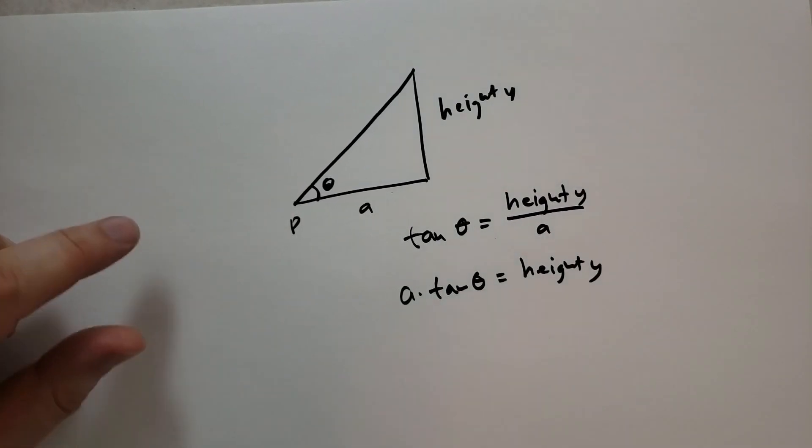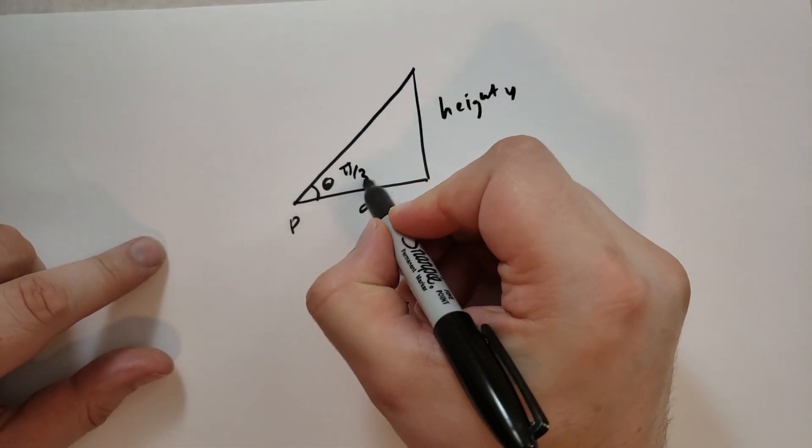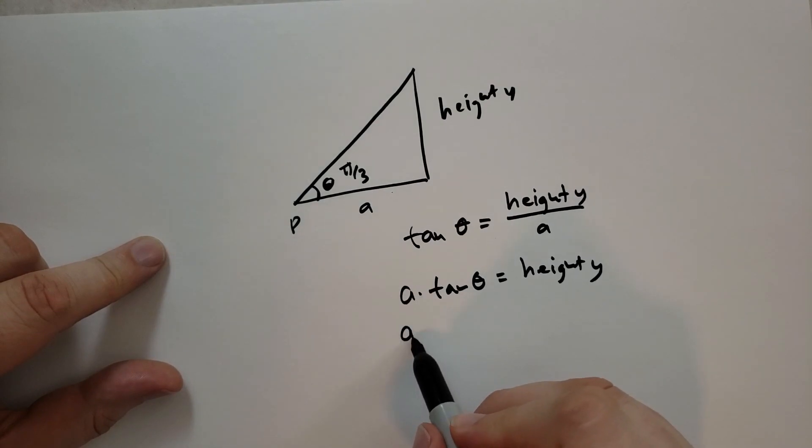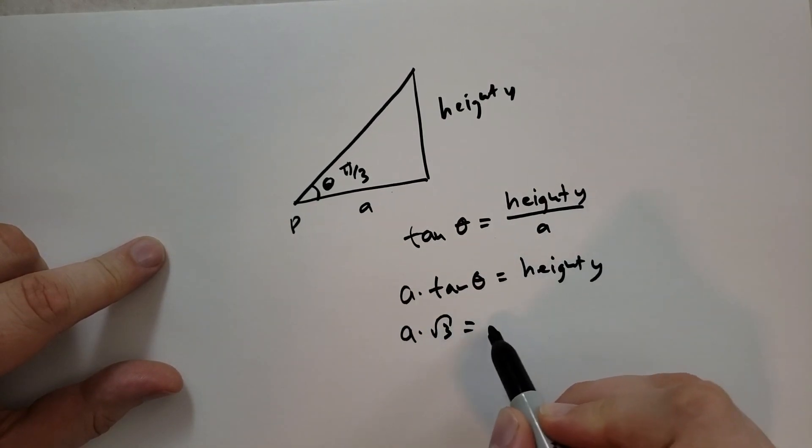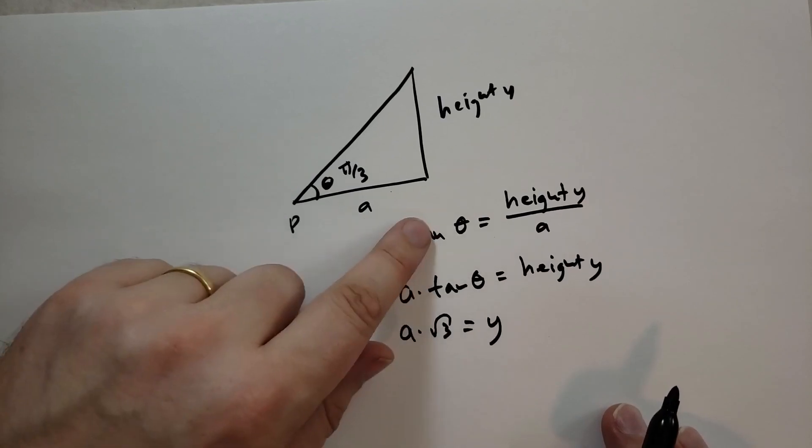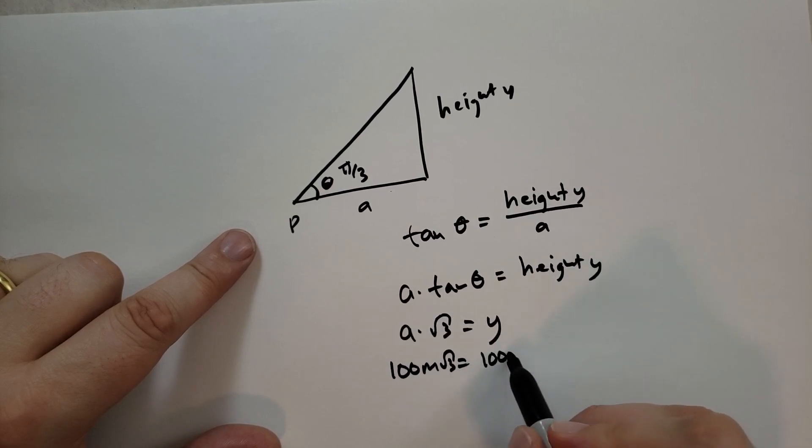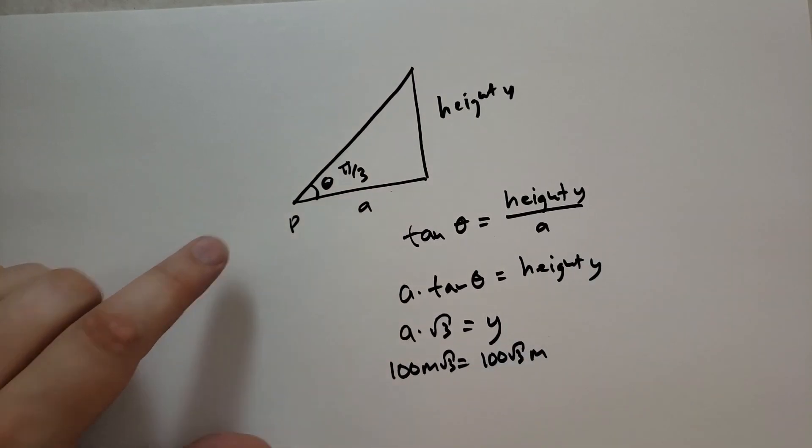So in this case, let's say that we had the angle here π over 3. Then we know that tangent of π over 3 is root of three. So we have A times root of three equals the height Y. So whatever A is. If A is like 100 meters, so we had 100 meters times root of three. So the height Y is just 100 root of three meters. That's all it is.